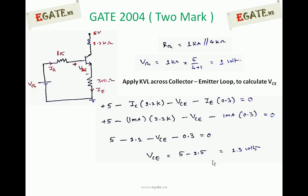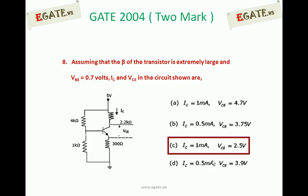So IC calculated is 1mA, VCE calculated is 2.5V. The correct answer for the given question is C. Thank you.